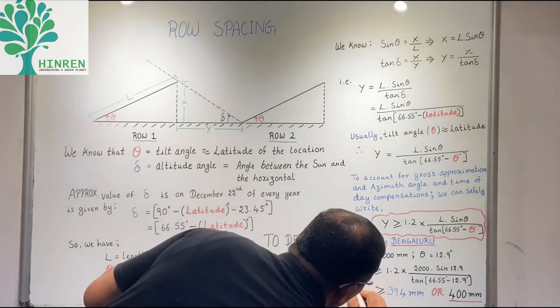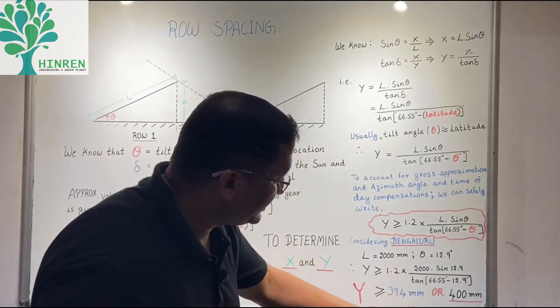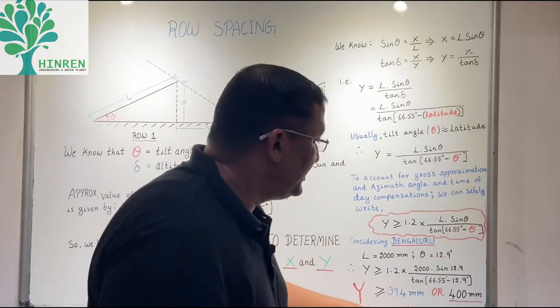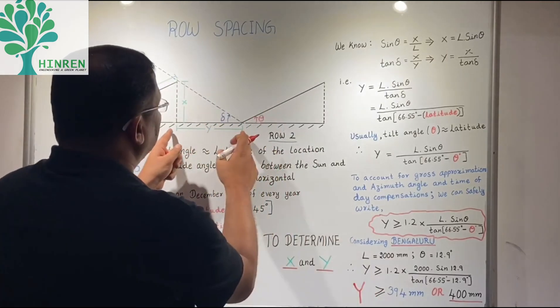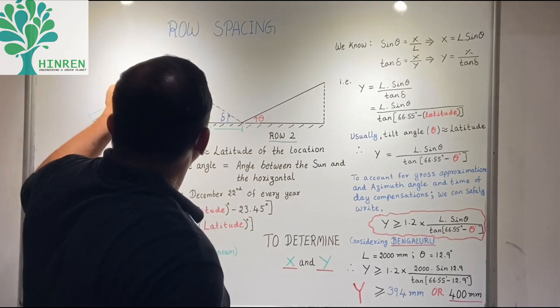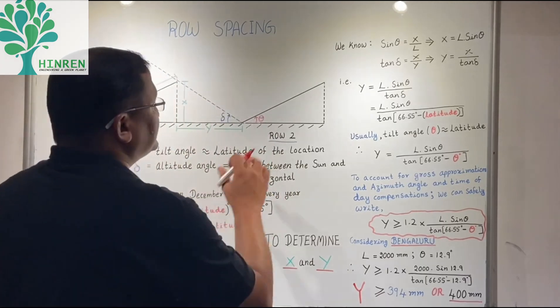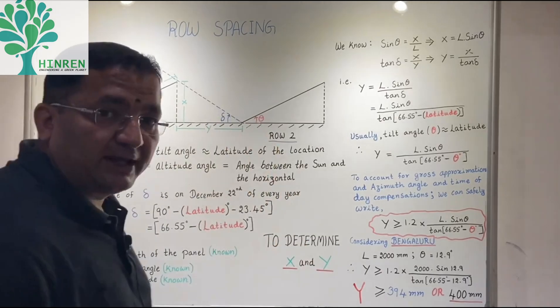We arrive at y being greater than or equal to 394 mm, or say 400 mm. So if we place the solar panels 400 mm apart, the shadow of this panel will not fall on the next panel. Thank you very much.